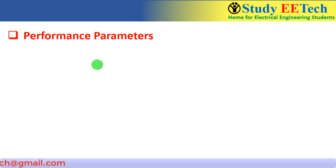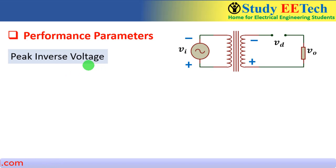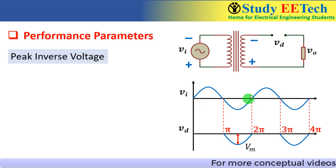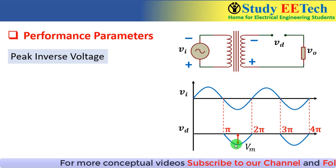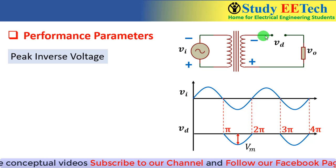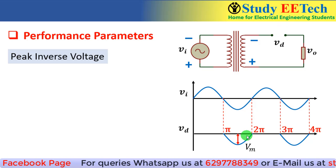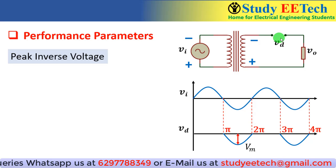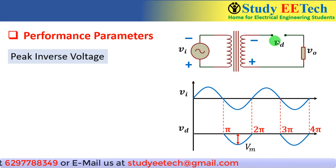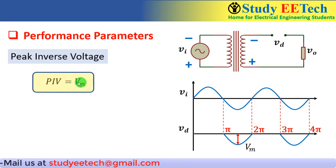There are two more things to remember. The first is peak inverse voltage (PIV) — this is the voltage appearing across the diode when it is off. In the negative half cycle of the equivalent circuit of the half-wave rectifier, the negative voltage appears at the anode and positive at the cathode, so the voltage measured from anode to cathode is negative. The maximum negative voltage the diode faces is −Vm, so the peak inverse voltage for the diode is Vm.